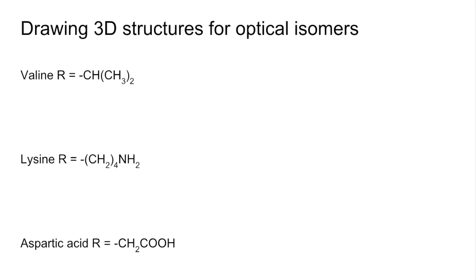I've got three for you: valine, lysine, and aspartic acid. The first thing I would do is draw an empty tetrahedron - that's going to be the chiral carbon. Then just put your groups on. They can be in any order, so I've chosen to put them on like that. We'll do the same for lysine and aspartic acid.